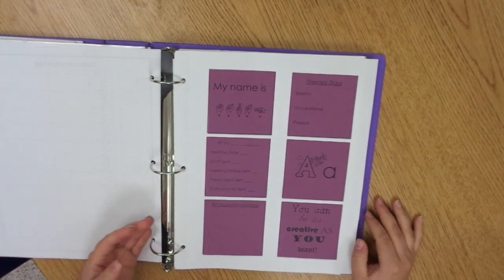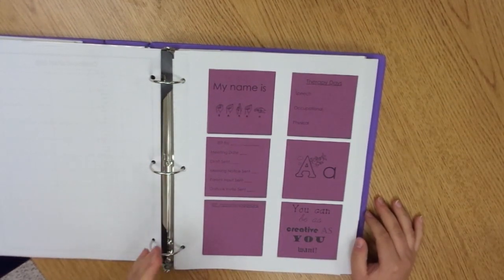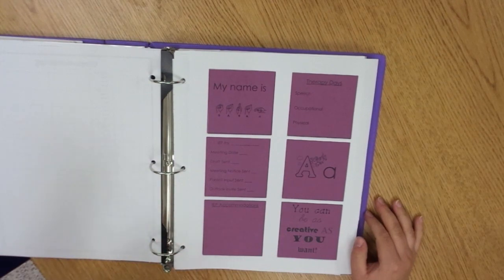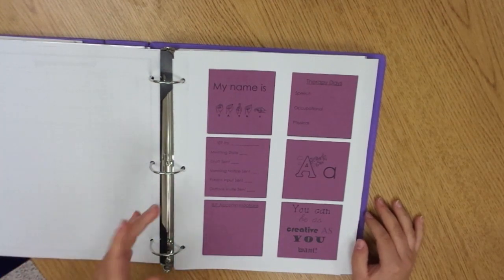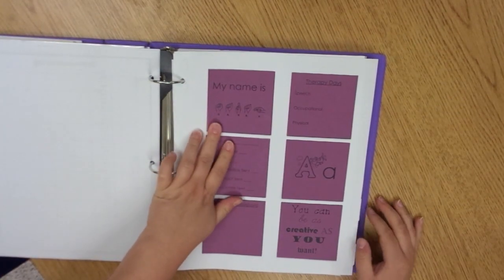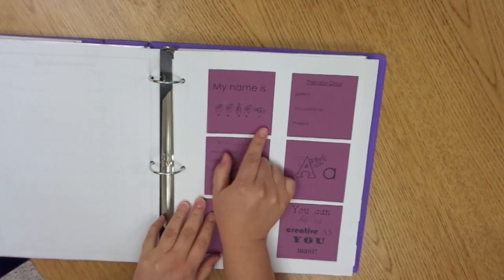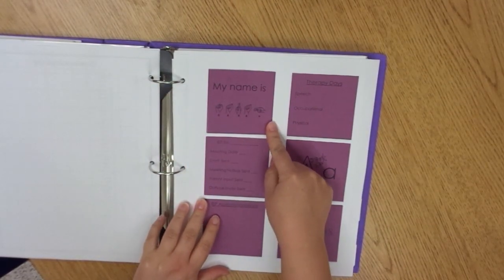So one thing that you can do if you do have students who sign, I use a lot of sign language in my classroom, letters, numbers, shapes, common objects, common words. So you could just print out a student's name. This would just be the letters for Sarah in sign language.